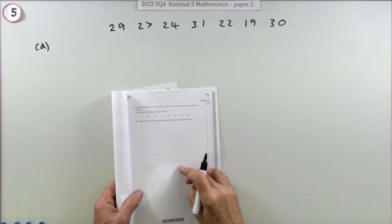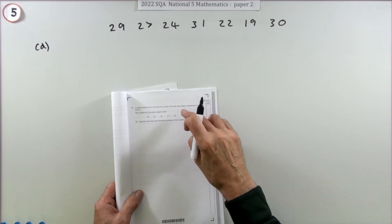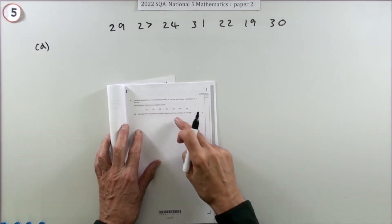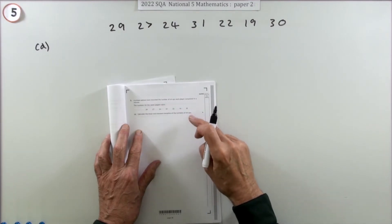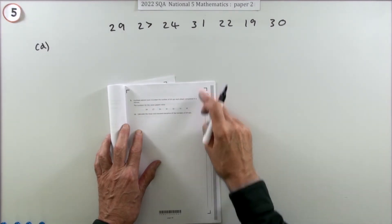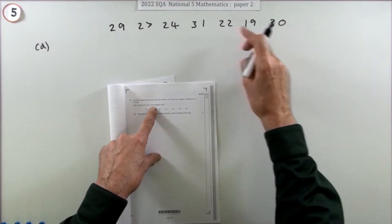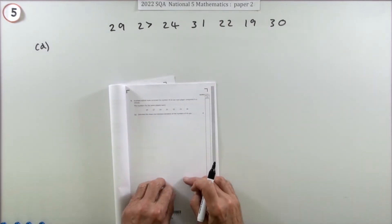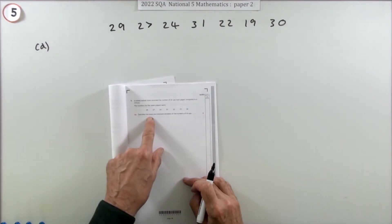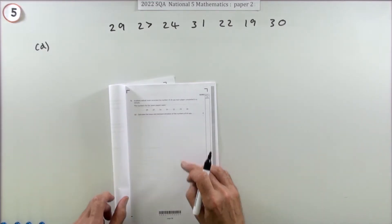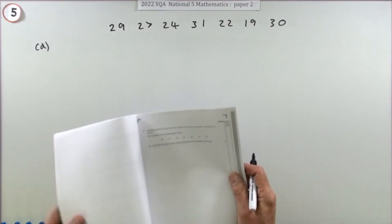Number five from the 2022 National 5 paper two - it's a six-mark question about means and standard deviations. A school netball team recorded the number of sit-ups each player completed in a minute, and there are seven results. Part A, for four marks: calculate the mean and the standard deviation.